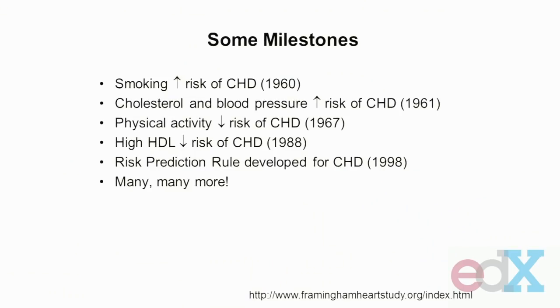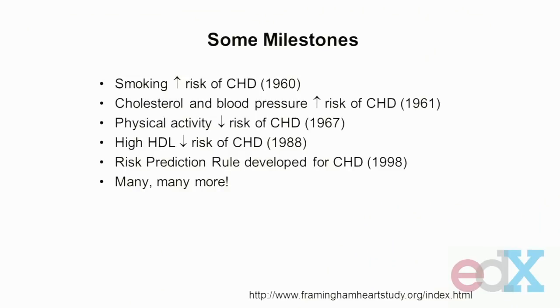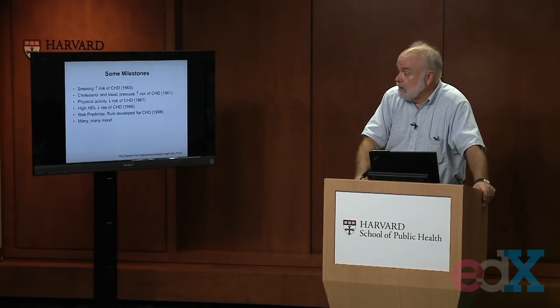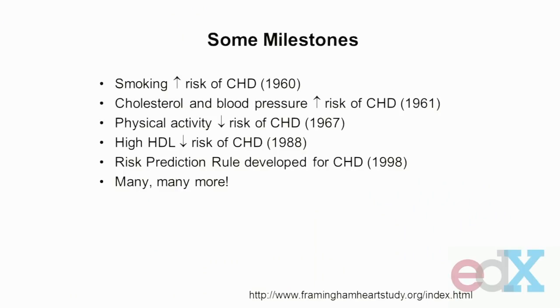They showed that physical activity was good for you — it lowers your risk of heart disease. They showed the components of total cholesterol, HDL and LDL: the good cholesterol, HDL, at high levels actually decreases your risk of heart disease. They developed prediction rules. You can go to their website — and we will later in this course — and predict your risk of developing a heart attack in the next 10 years by plugging in your values for certain risk factors. Remember in the first lecture I mentioned clinical epidemiology and the role of predicting either prognostic or diagnostic information from risk factors — we'll be talking about that using the Framingham model and the Framingham data.